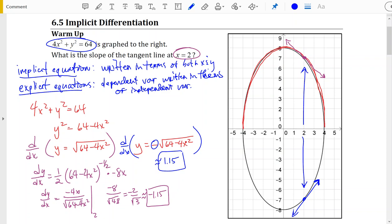So this is a very common approach to a question like this: take that implicit form, try and rewrite it in an explicit way, and then take the derivative normally.